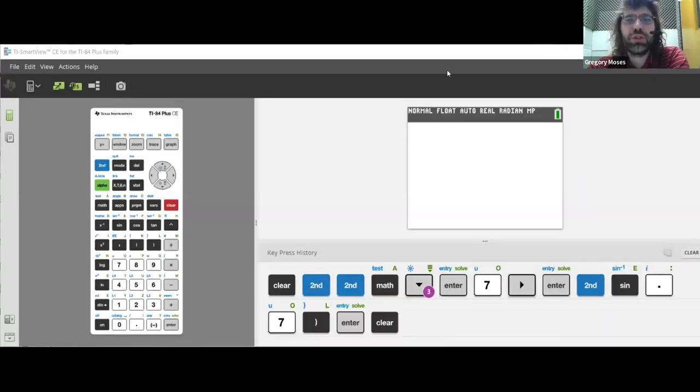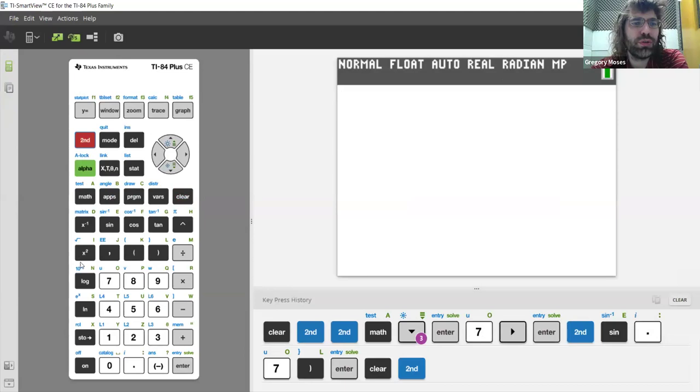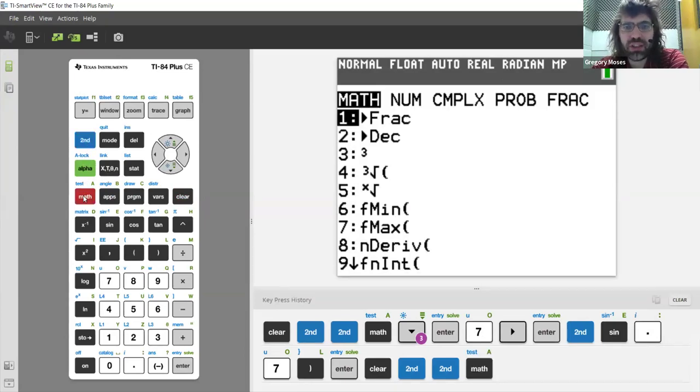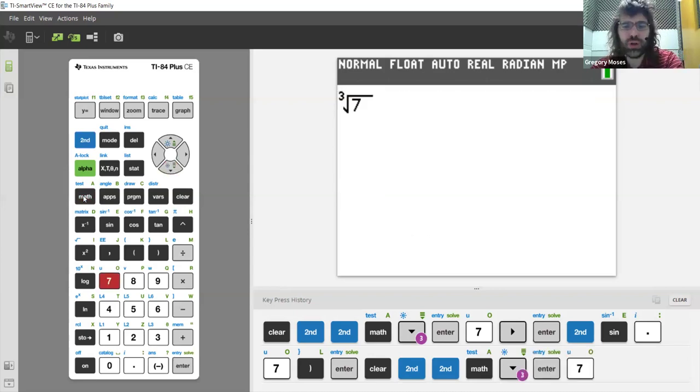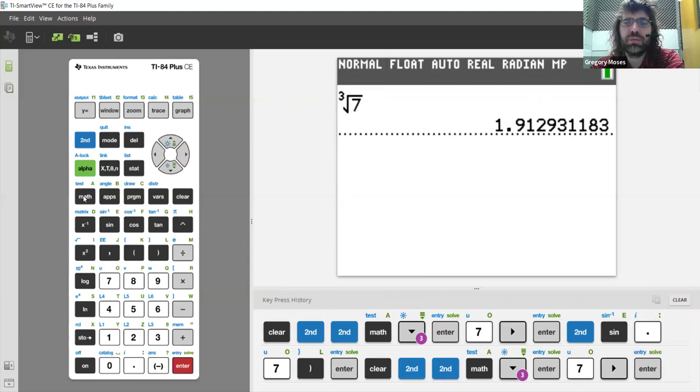And then you go to your calculator, or computer algebra system, or whatever it is you're using, and you ask it, what's the cubed root of seven? And it tells you. And you have solved the problem. X cubed equals seven has as its solution, 1.913.